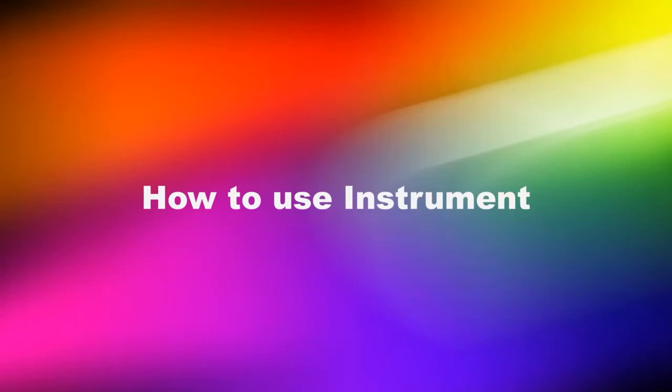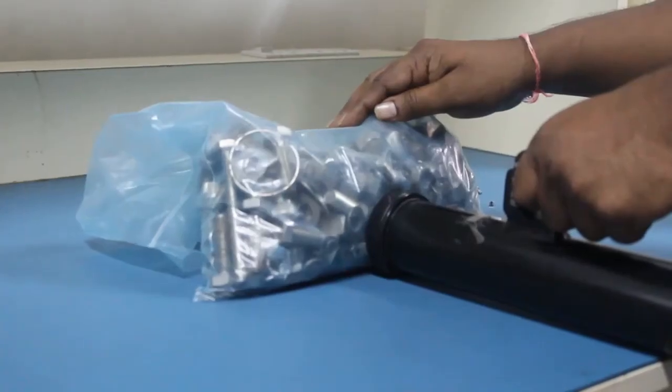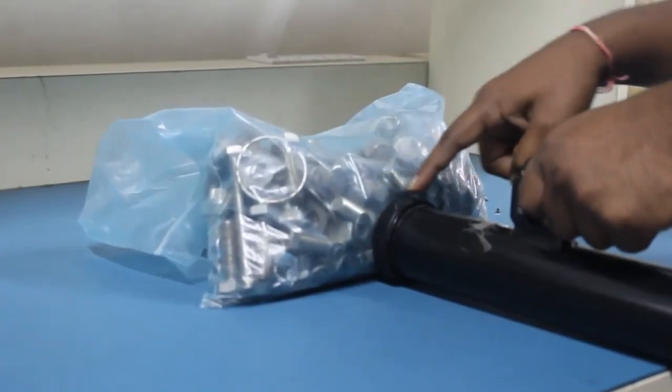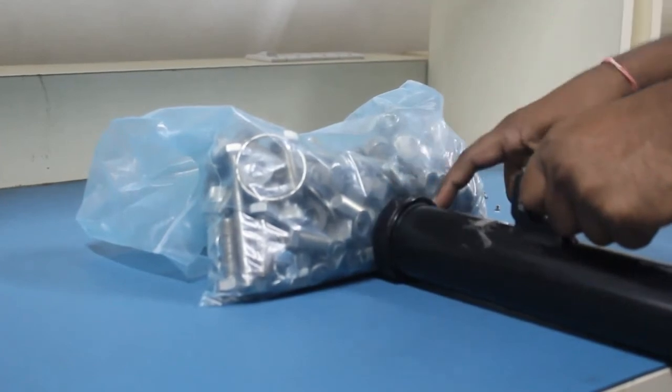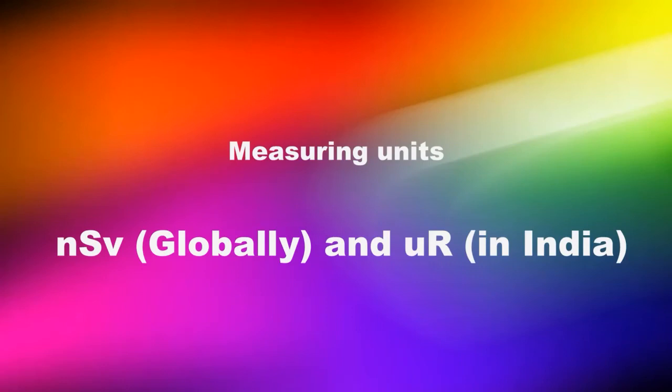Now let us talk on how to use instrument for measurement. Place the instrument detector front fascia touching the component metal part closely to its surface. Measuring units can be in nanosieverts globally, and microroentgen in India.